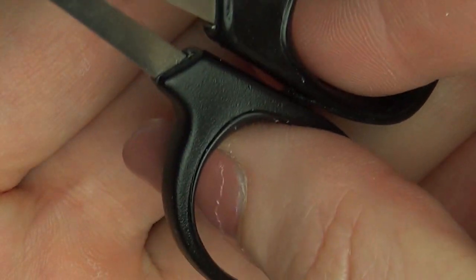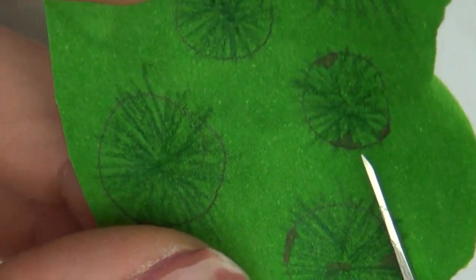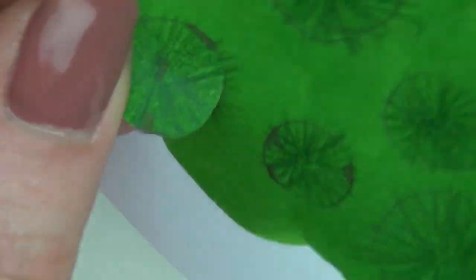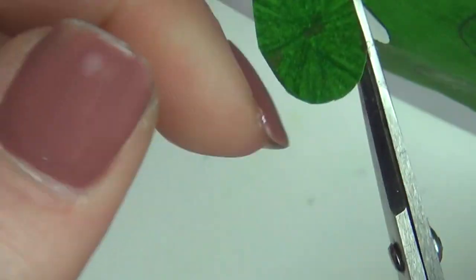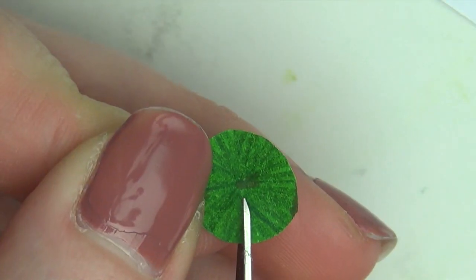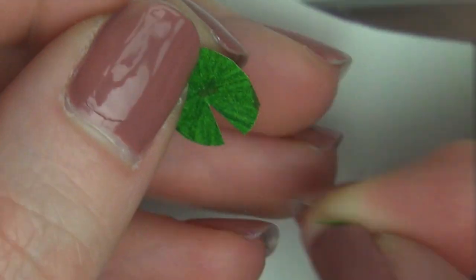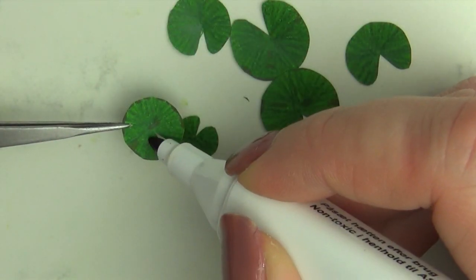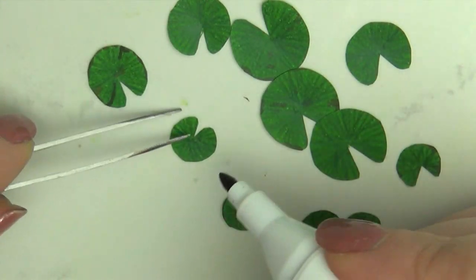Then I used a small pair of scissors to cut them out. I added a bit more of the brown marker before I glazed them on both sides.